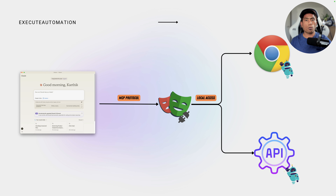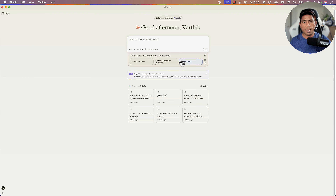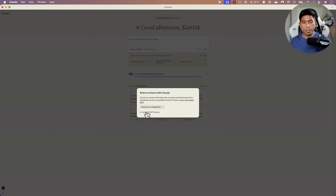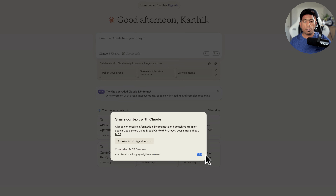The Playwright MCP server is already released, so you can add the reference or add the MCP server in your Claude desktop client and you'll see the functionality working. Any Playwright MCP server version beyond 0.2.4 should have this API testing feature. If it works on my machine, it's going to work on your machine as well.